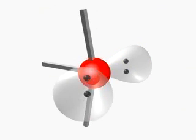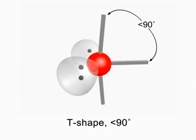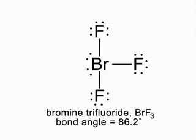With two lone pairs, the object is T-shaped, and the two remaining angles are less than the ideal 90 degrees. Bromine trifluoride is a T-shaped molecule.